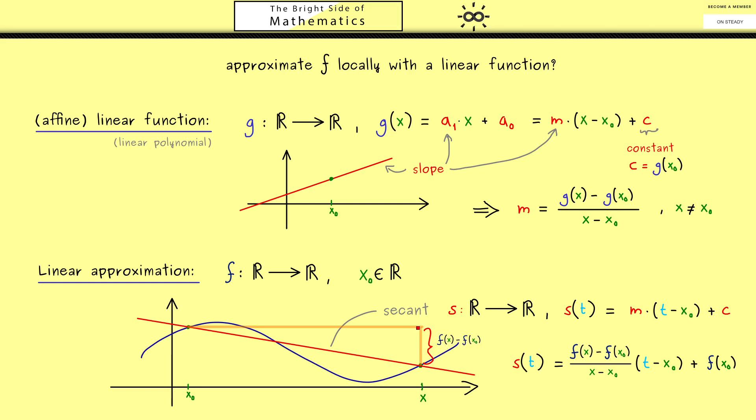Then in this limit we get something out we call the tangent. Still it's a linear function as the secant and often it's simply called y. Indeed now we already know the formula for it. It's simply the secant with a limit in front of it. So you see we just have the limit x to x₀ for the slope.